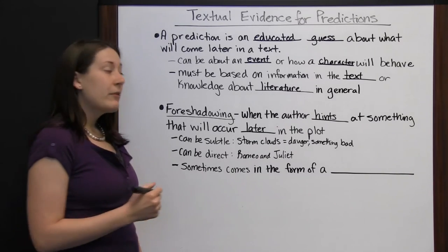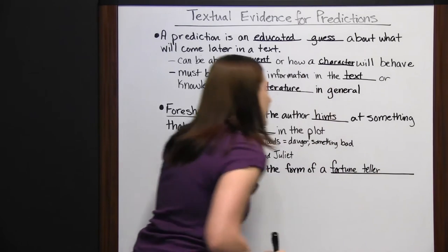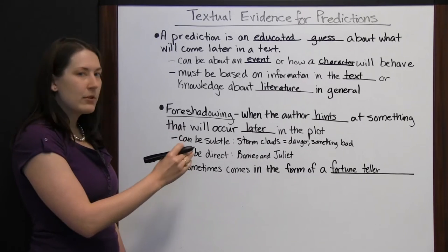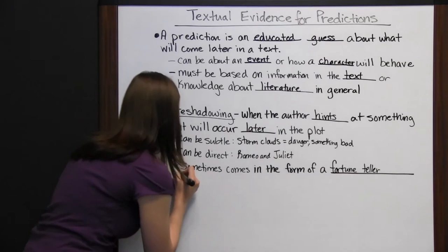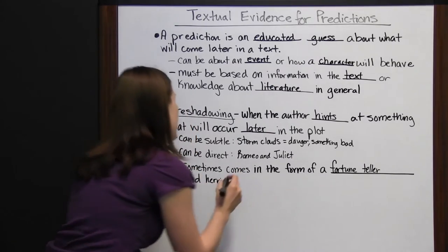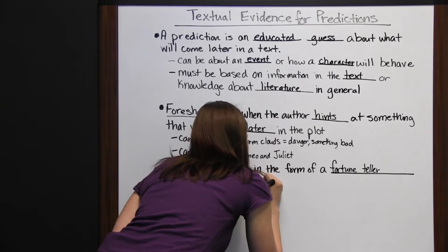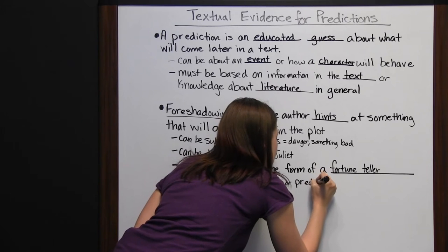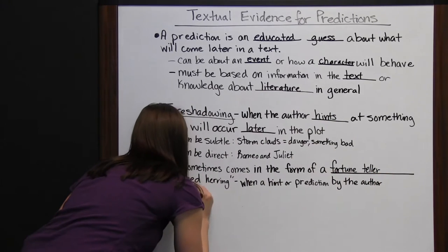Sometimes foreshadowing comes in the form of a fortune teller. There are a lot of stories that include a fortune teller or someone that happens to tell someone's fortune or tell their future. They'll say exactly what's going to happen, and then later on that's how the plot unfolds. Now sometimes the author will throw in what's called a red herring — that's when they hint at what's going to happen, but it doesn't really happen. A red herring is when a hint or prediction by the author does not actually come true.